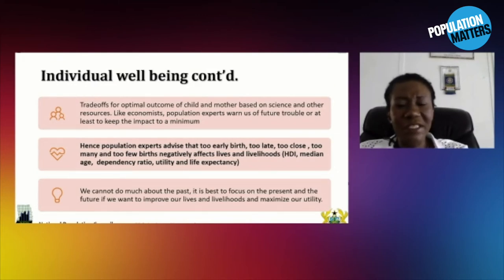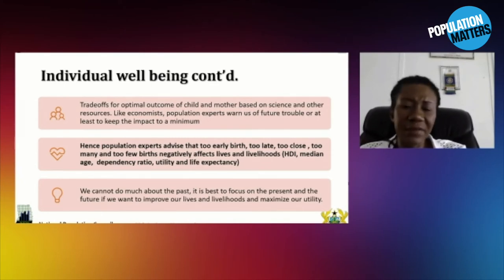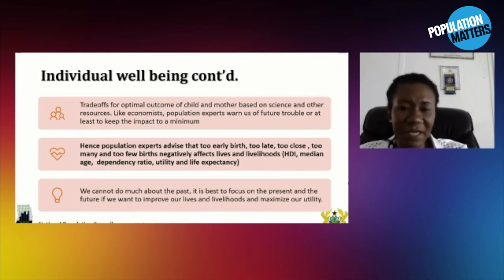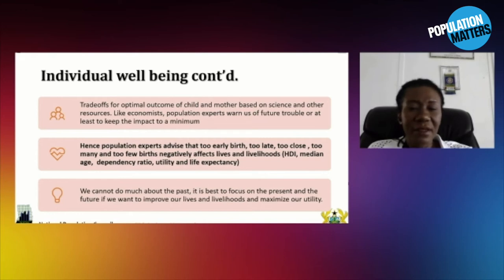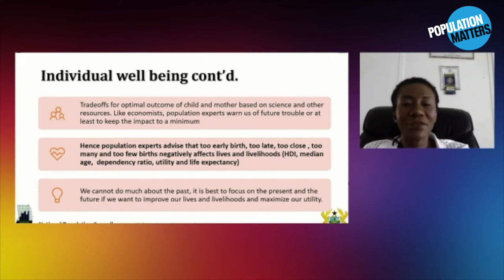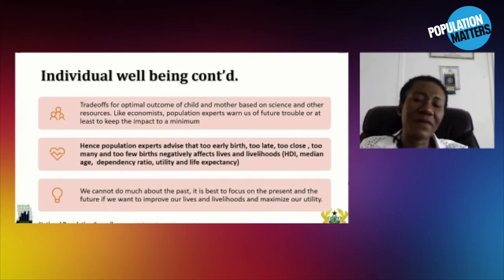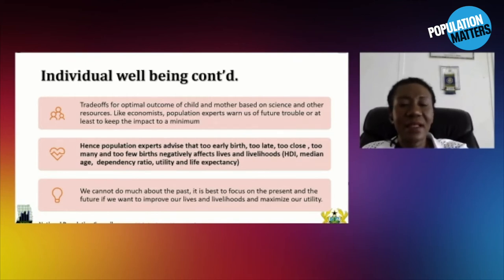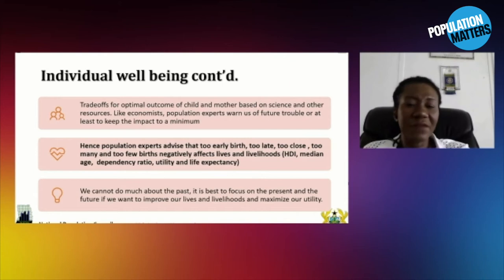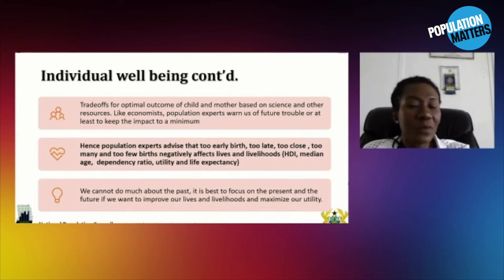We all know that we can't do much about the past, so we focus on the present and the future to improve lives and livelihoods and maximize our utility. Just as weather experts, economic experts, and all experts warn us about future problems or how to have the minimum impact if there's a problem — that's why when there's a hurricane, they tell us to move out because of the impact. Population experts also have the same mandate to advise that some behaviors affect our lives and livelihoods negatively, because it would increase our dependency ratio, reduce our life expectancy, and utilities will also be compromised. All experts are supposed to advise for current and future because we cannot do much about the past.